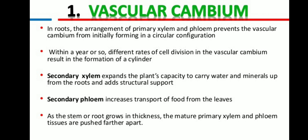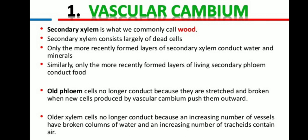Secondary xylem expands the plant's capacity to carry water, which is necessary as the plant increases in size. As the plant's mass and size increase, the plant performs more food synthesis and transfers more food to other tissues, necessitating secondary phloem as well. Secondary xylem is what we commonly call wood. It consists largely of dead cells; only the more recently formed layers conduct water and minerals. Similarly, only the more recently formed living secondary phloem conducts food, as old phloem cells no longer conduct because they are stretched and broken.